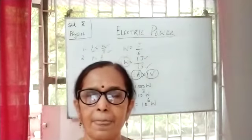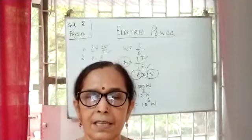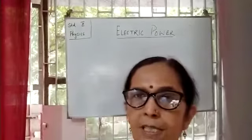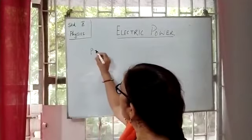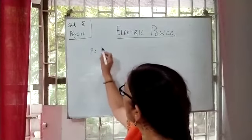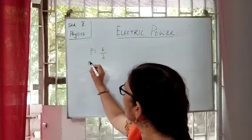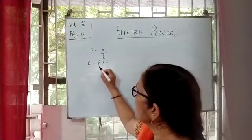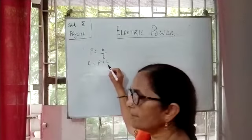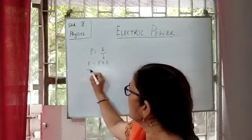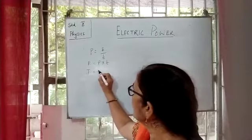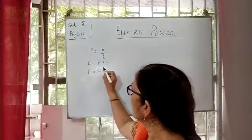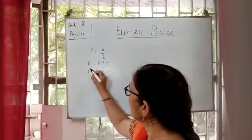Now we will see the relation between power and energy. We know that power is equal to E by T, so we can also write it as E is equal to P into T. Here, E represents energy, P represents power, and T represents time. Energy is measured in the SI unit of joule, power in watt, and time in seconds. So watt-second is nothing but joule.